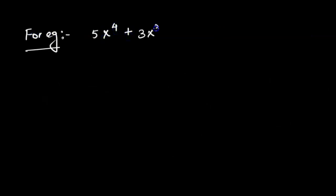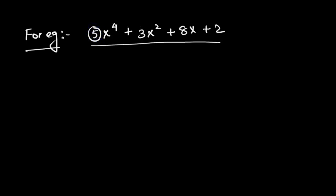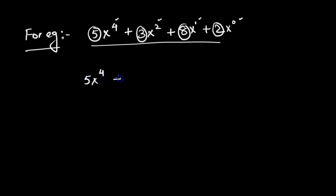Let's take an example: 5x to the power of 4, plus 3x squared, plus 8x, plus 2. The numbers 5, 3, 8, 2 are the 'a' values. We notice power 3 is missing, so this can be written as 5x⁴ + 0x³ + 3x² + 8x¹ + 2x⁰, where the coefficient for x³ is 0, since 0 times anything is 0.